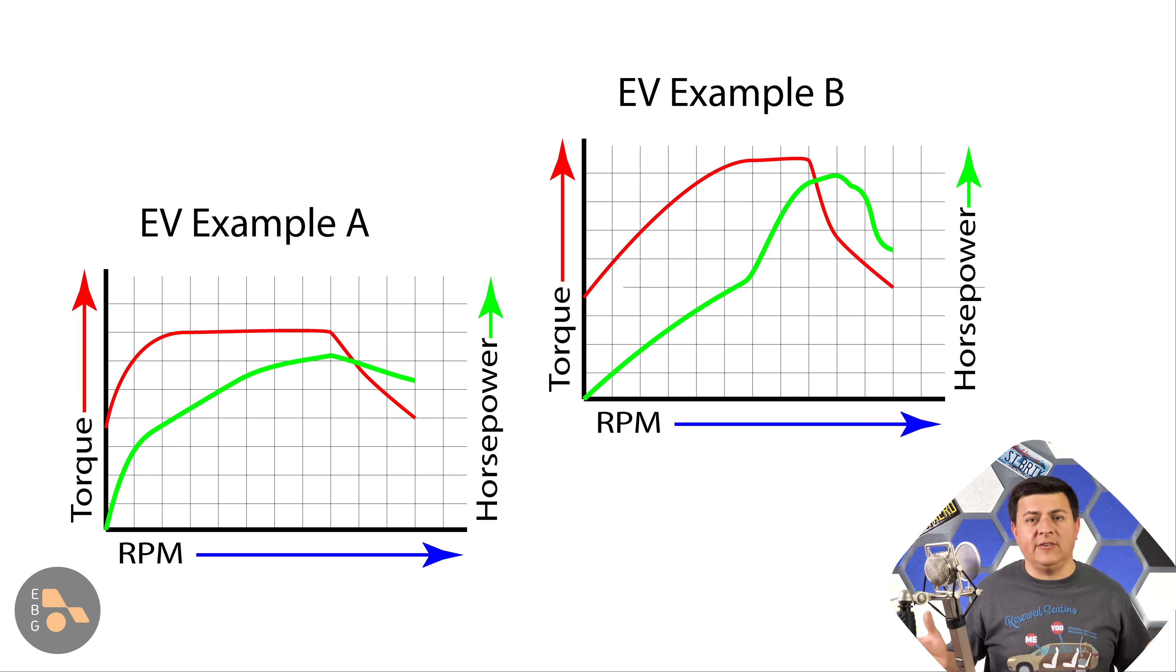But when we take a look at an electric vehicle, there's the design consideration of how quickly we want to ramp power that suddenly makes some of these numbers less meaningful. This conflicting reality is why we're going to see more and more of this on the market, where we have two EVs with pretty similar power outputs, pretty similar weight profiles, but one will go 0-60 significantly faster than the other.